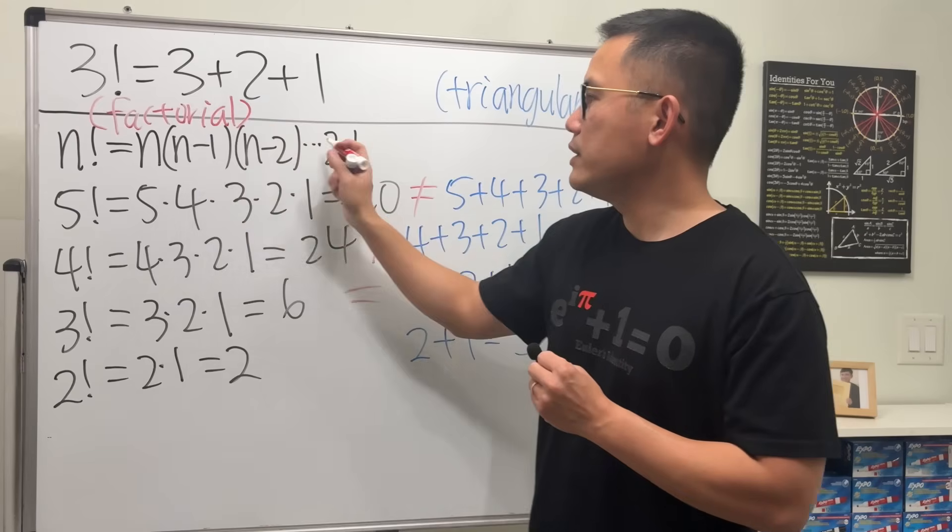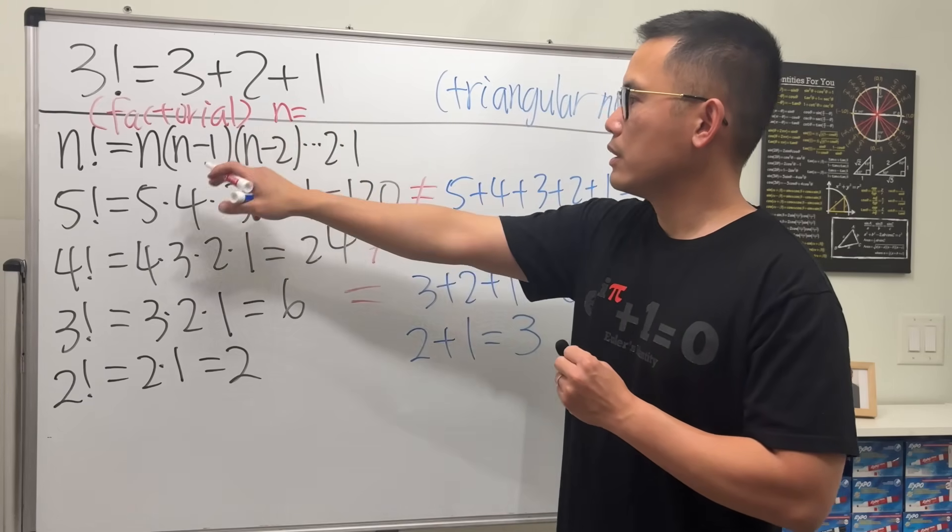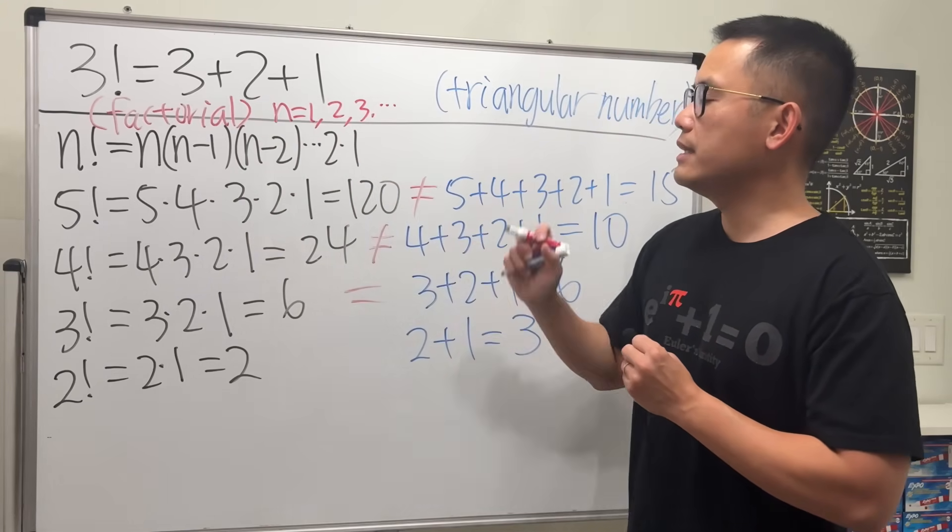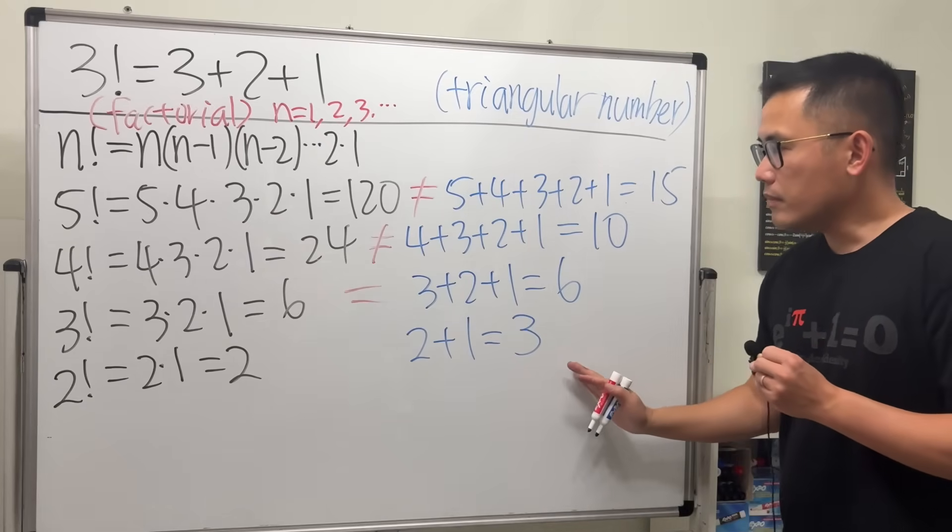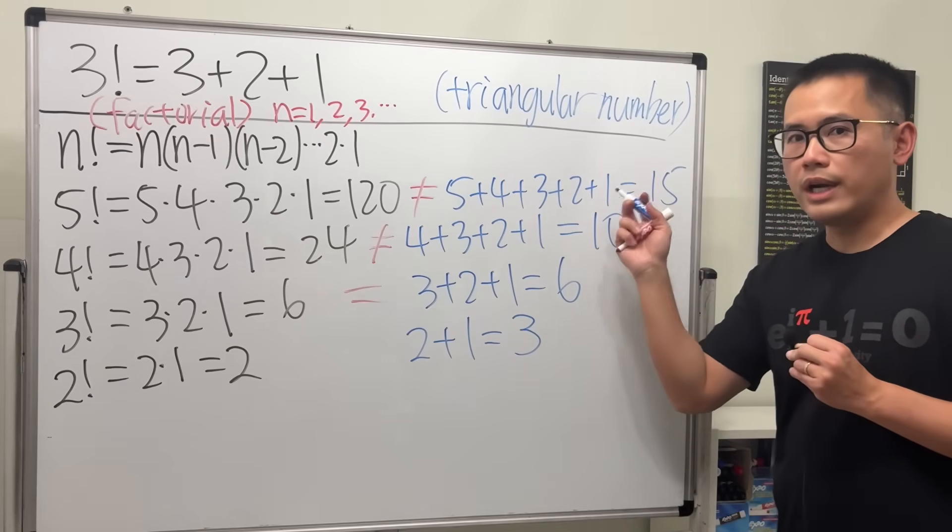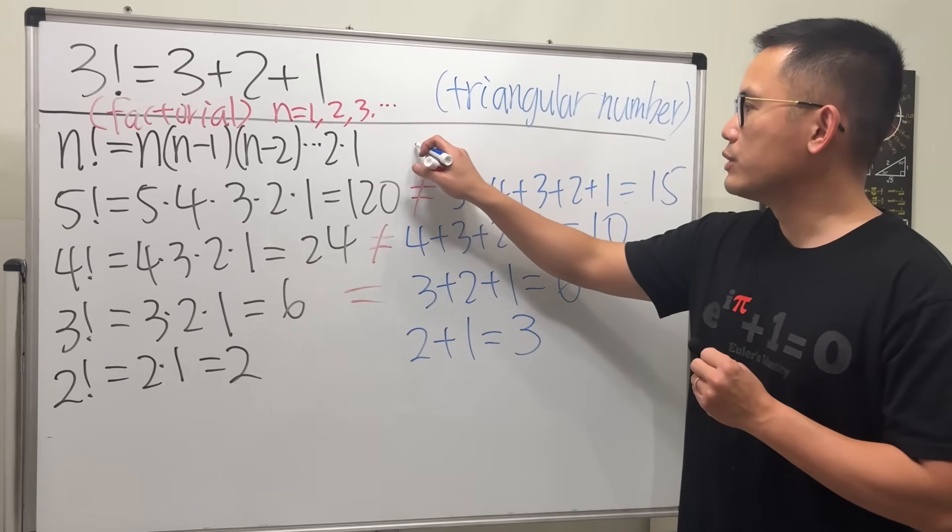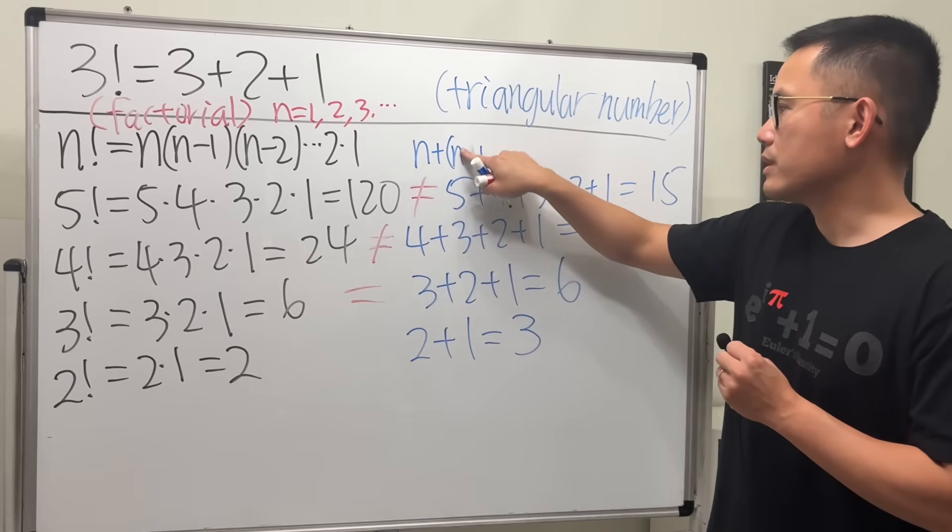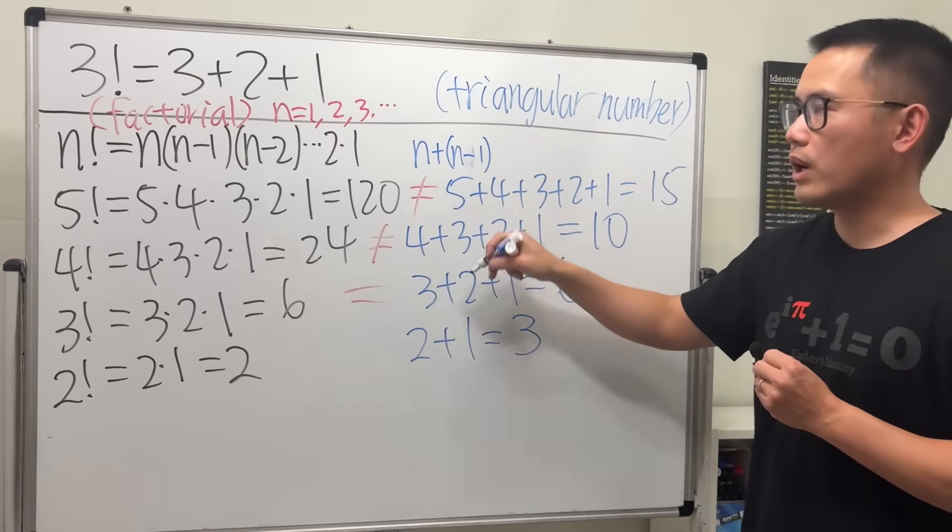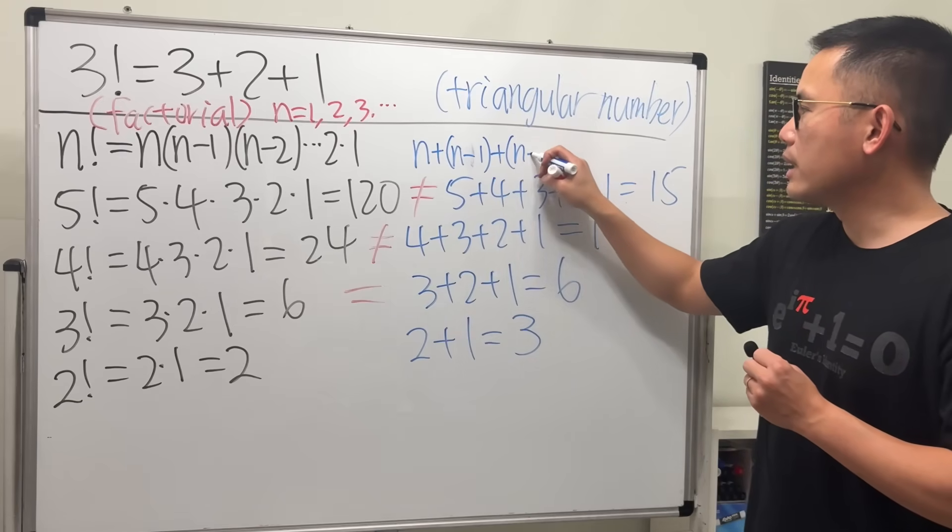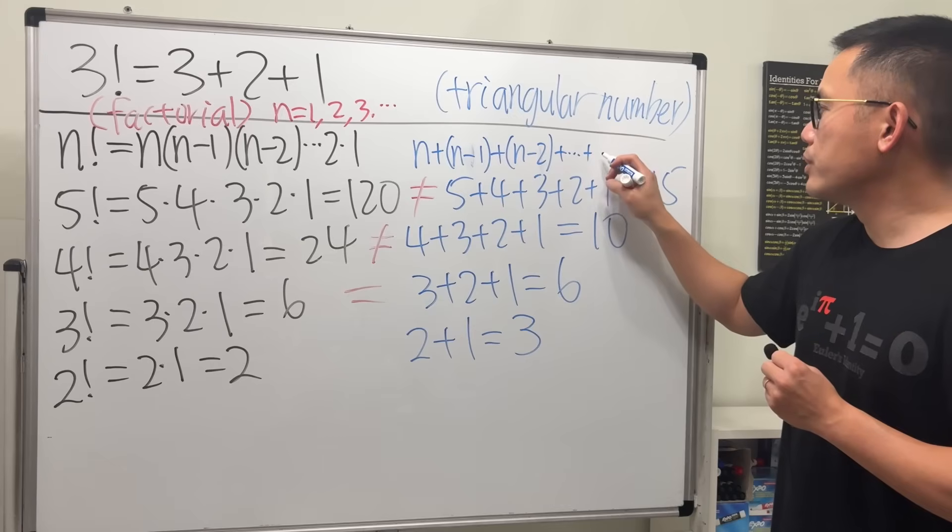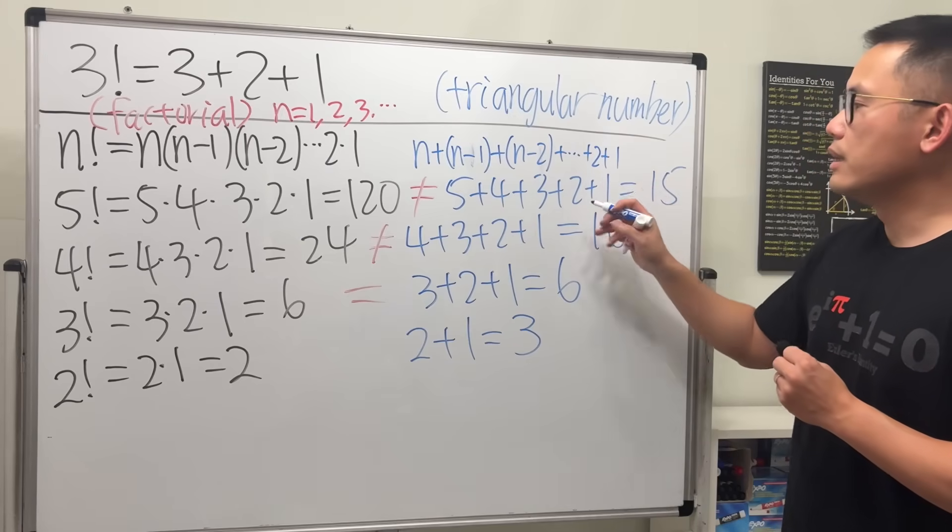In this video, our n value is just positive whole numbers: 1, 2, 3, and so on. For the triangular number, what you do is take n, then add the next value that's one less, so n minus 1, then add n minus 2, and so on up to 2 and 1. Unfortunately, we don't have a nice notation like factorial, but we actually have a...